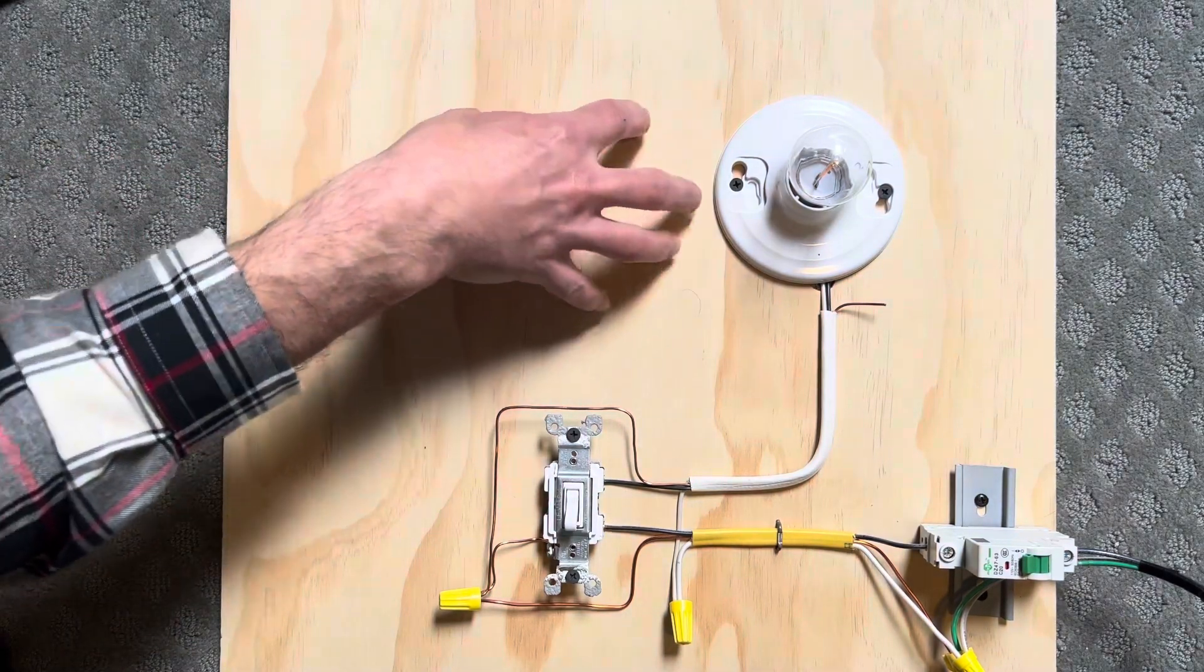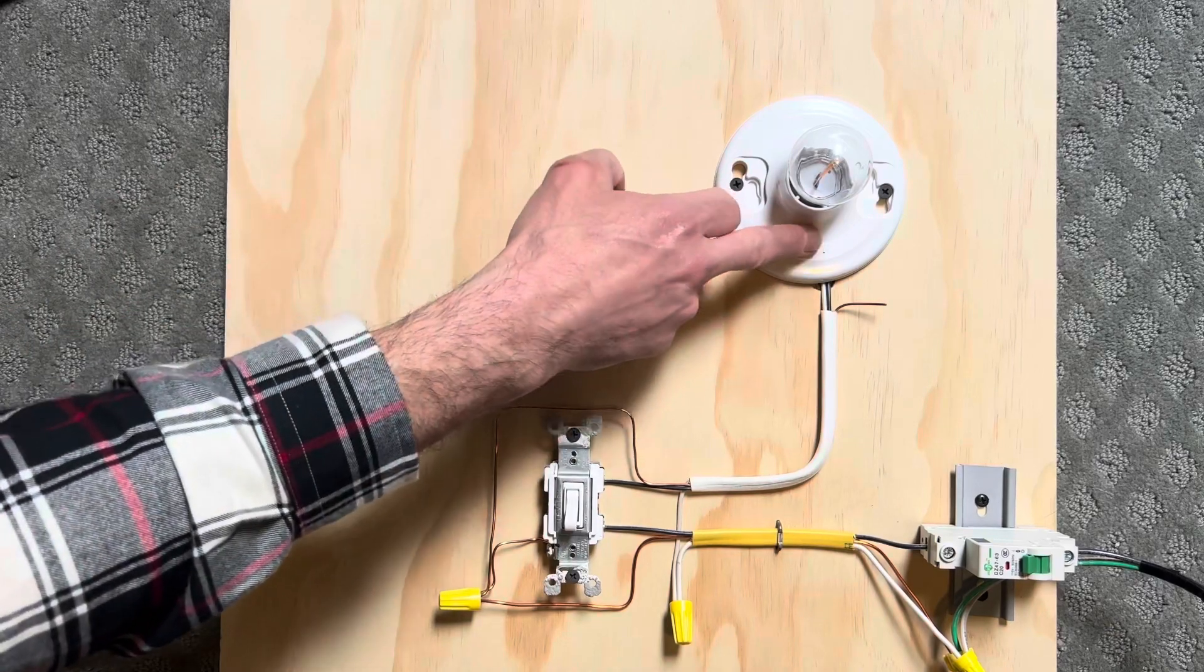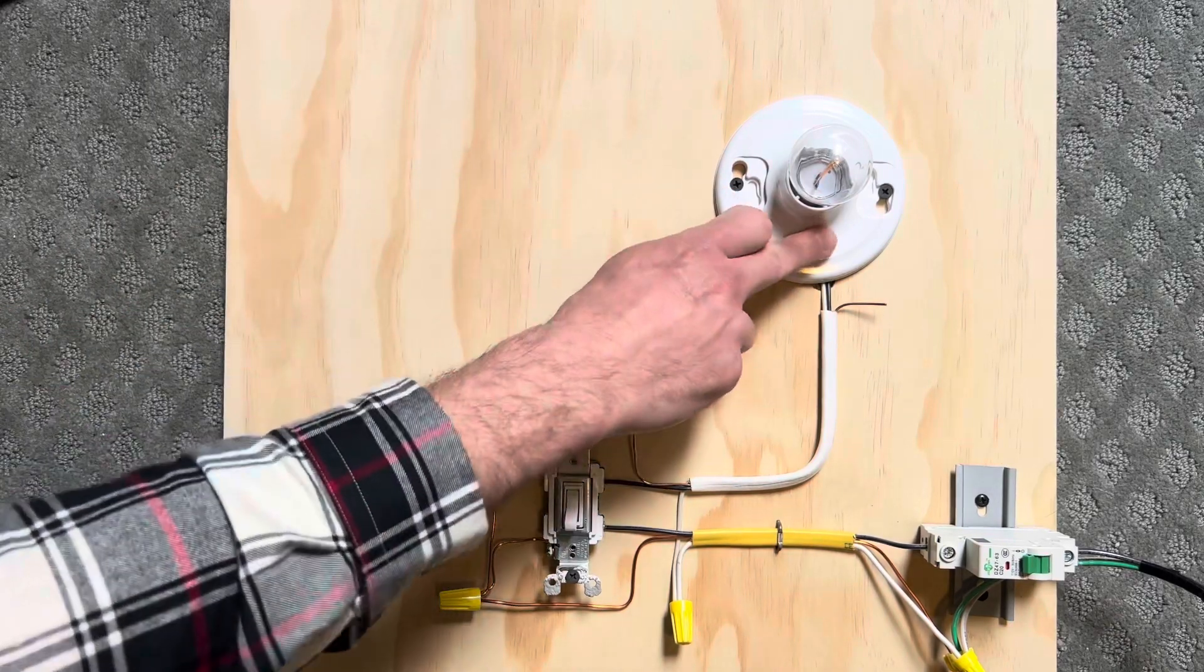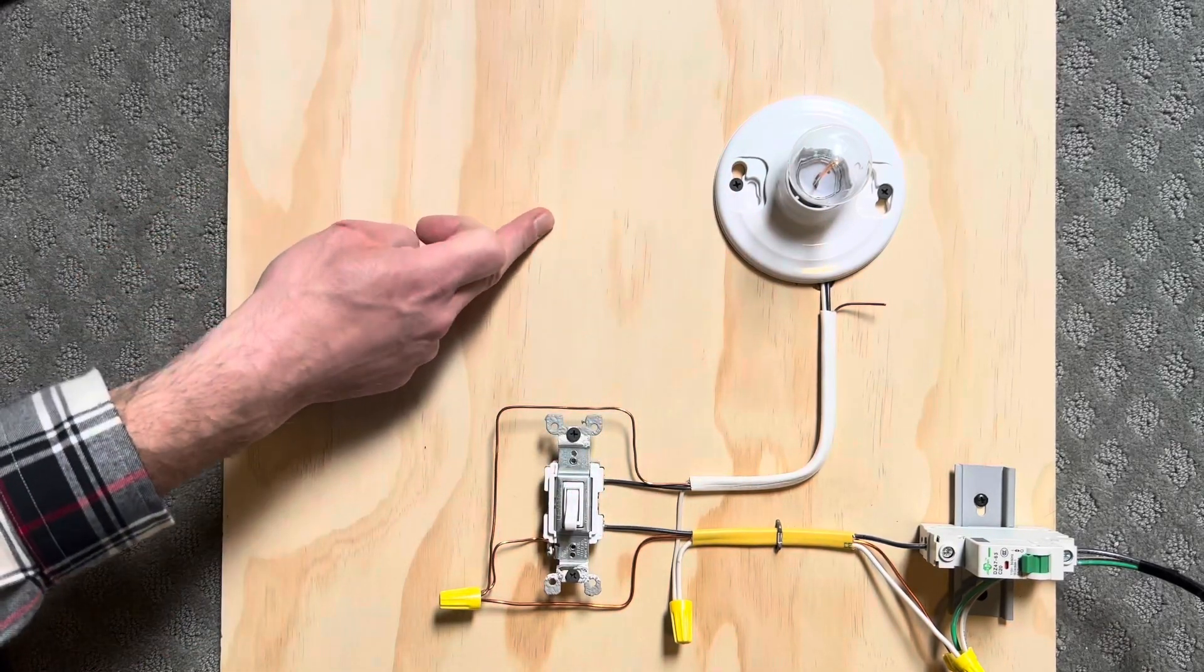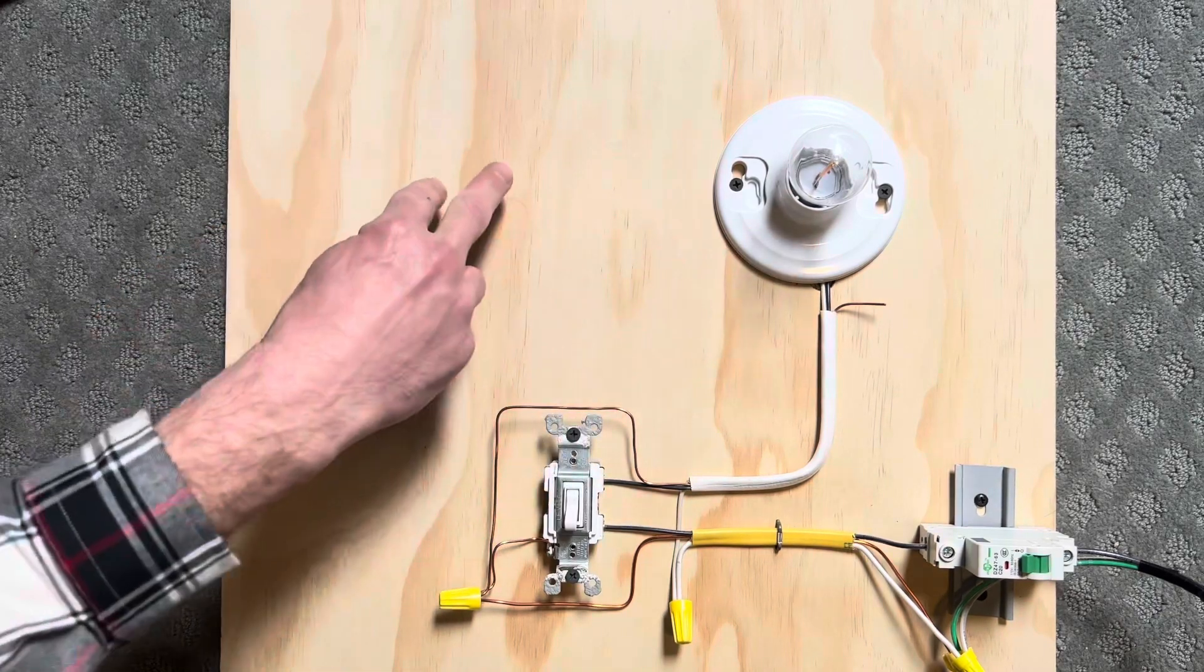If you had multiple lights set up here, you would just take your black where you landed on here and daisy chain it over to the next one along with your white. You just keep doing that. You can have multiple lights running on the same circuit.